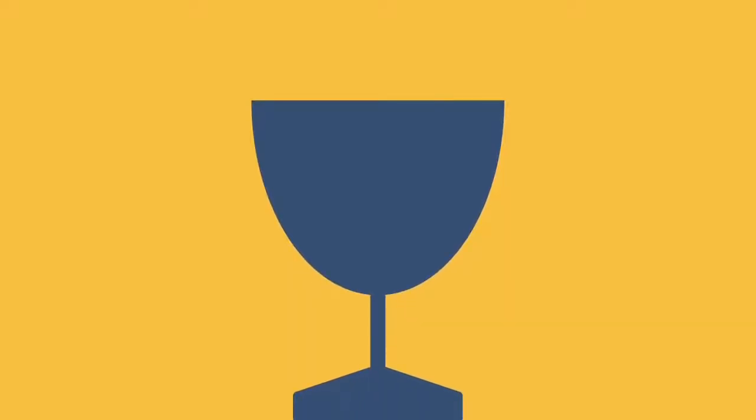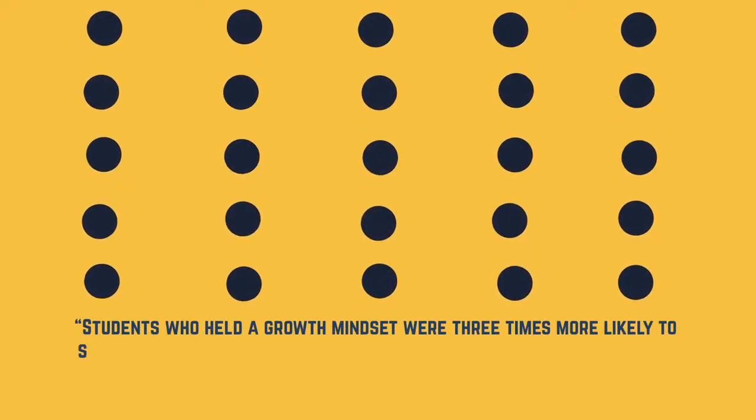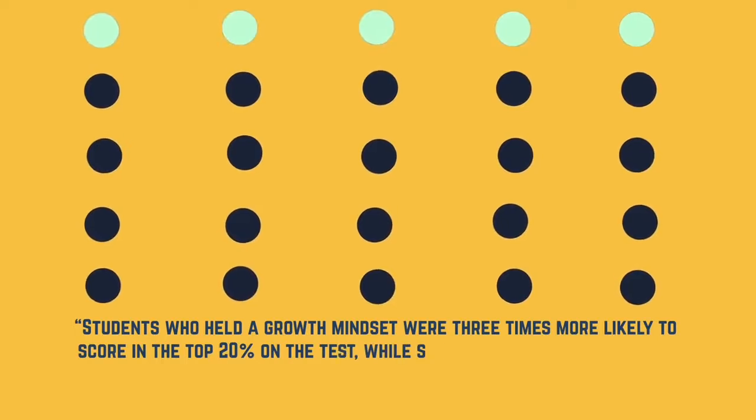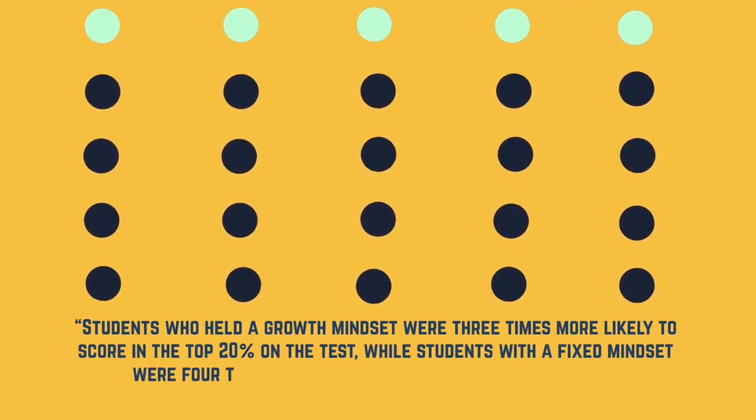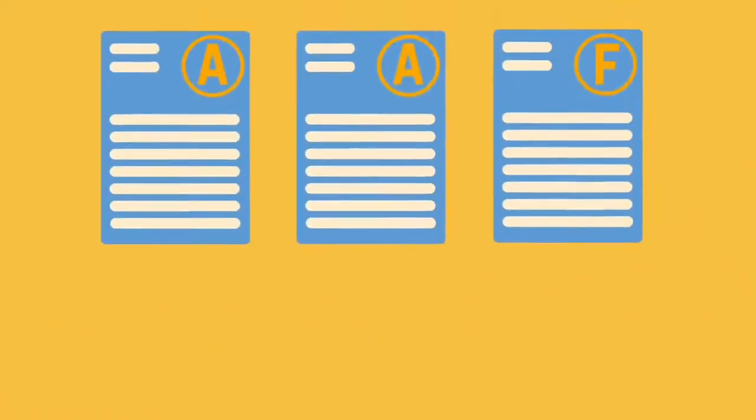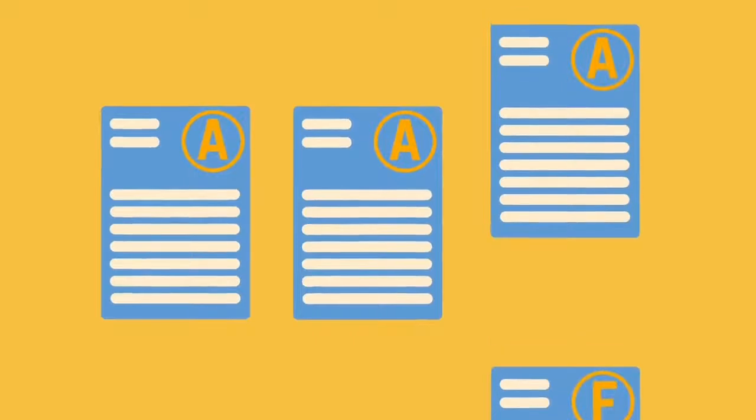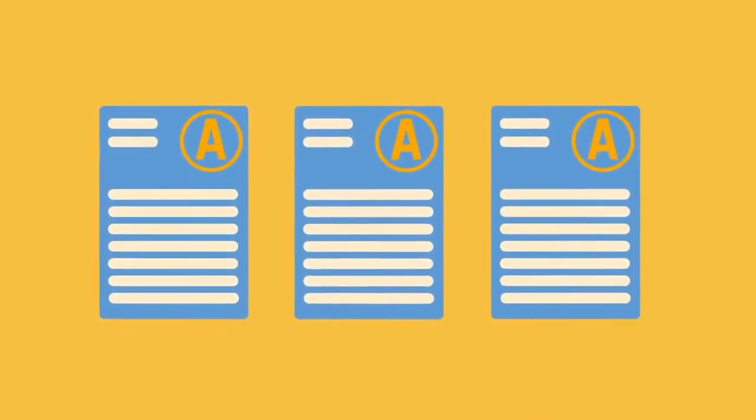Well a lot of research seems to suggest that people with the growth mindset are more successful than people with the fixed mindset. For example, a study found that students who held a growth mindset were three times more likely to score in the top 20% on the test while students with a fixed mindset were four times more likely to score in the bottom 20%. Another study found that when seventh graders participated in a growth mindset program, they were able to avoid a drop in grades which usually occurs in middle school.